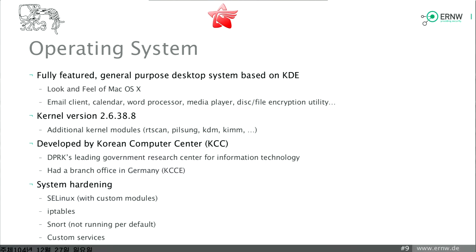The operating system is a fully featured general desktop system based on KDE and Fedora, mimicking the look and feel of Mac OS X. It has an email client, calendar, word processor, QuickTime, and even a disk encryption utility. They implemented additional kernel modules — RT scan, Pilsung (which means 'victory' in Korean and supplies AES encryption), KDM (the Korean display module), and KIMM, which handles displaying Korean letters on screen.